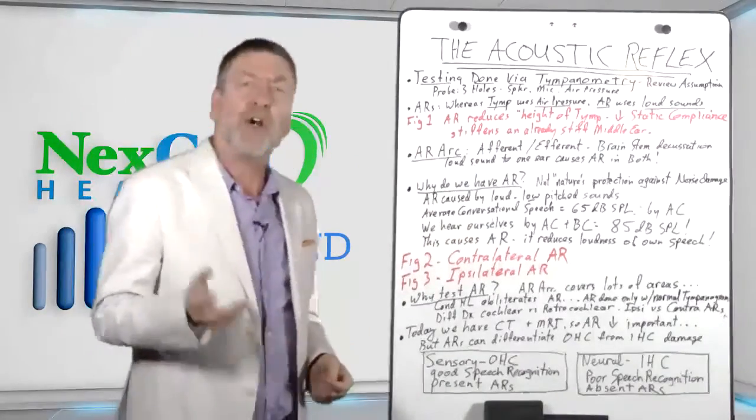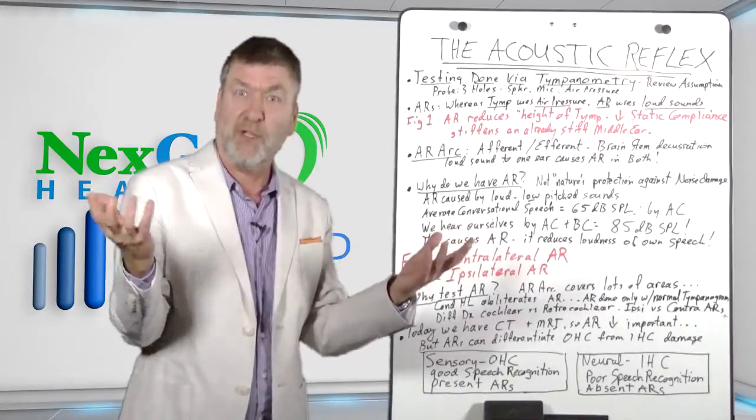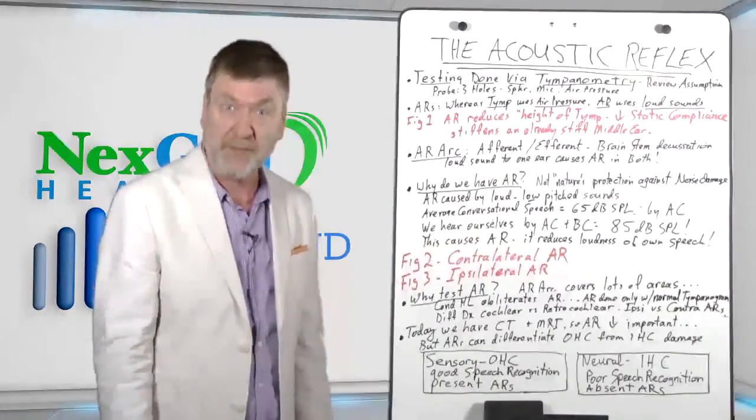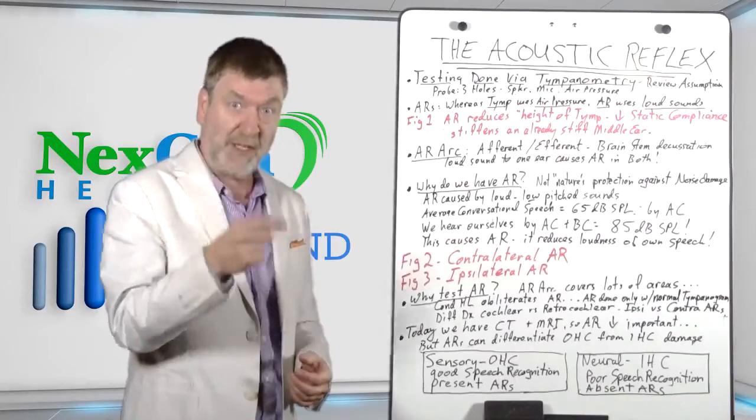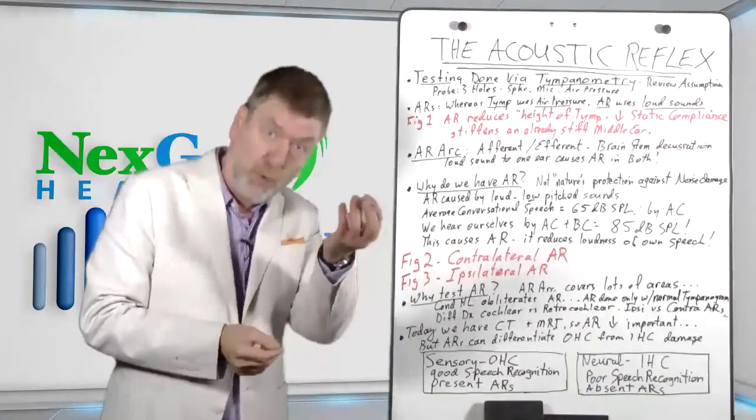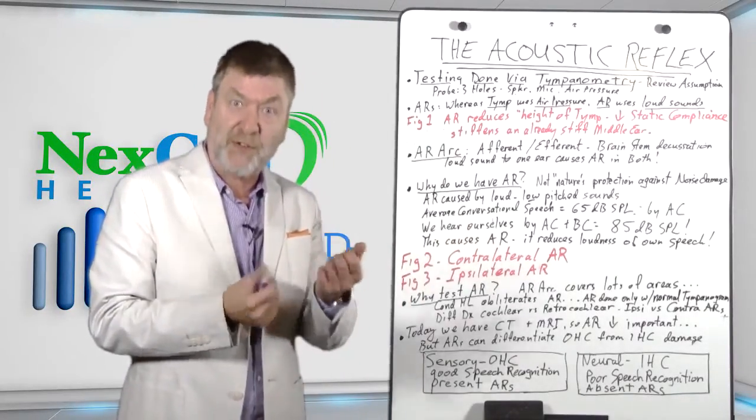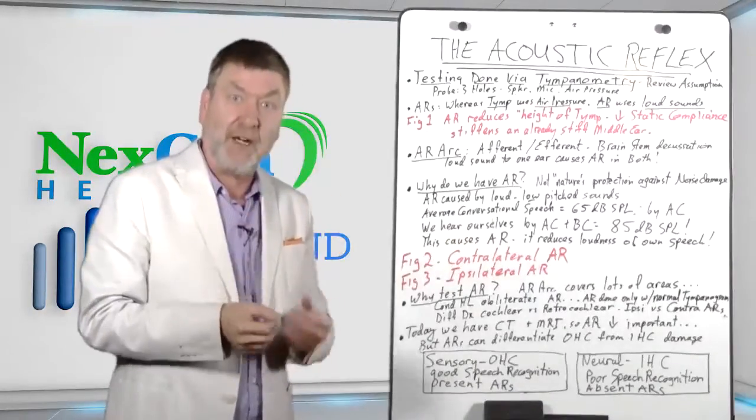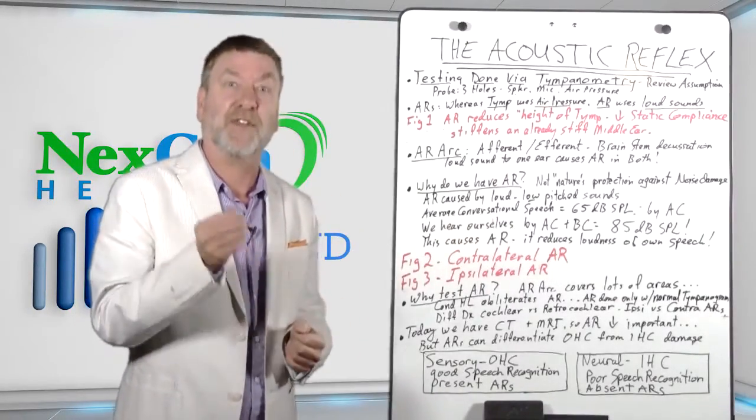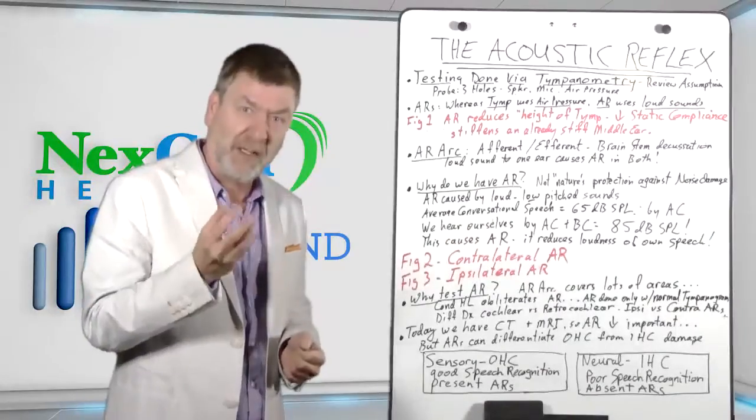The acoustic reflex arc, what's all involved with it? Just about anything related with hearing. The outer ear, the middle ear, the cochlea, the eighth nerve, the low brain stem, then the fifth and seventh cranial nerves terminating on the tensor tympani muscle and the stapedius muscle of the middle ear system.